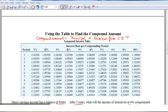Hello, in this example we will be using a table to find the compound amount. The compound amount is equal to a principal multiplied by the number from the compound interest table. This is a portion of the compound interest table.